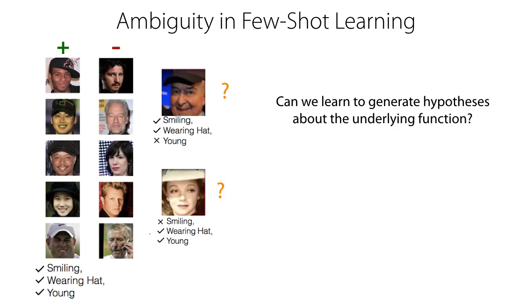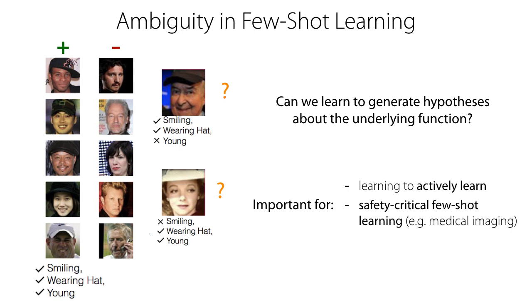The goal of this paper is: can we learn to generate hypotheses about the underlying function in few-shot learning problems? The ability to reason about uncertainty is important for learning to actively learn, safety-critical few-shot learning, and reinforcement learning settings.